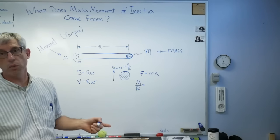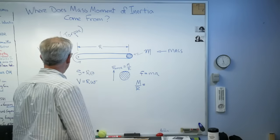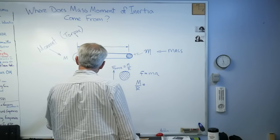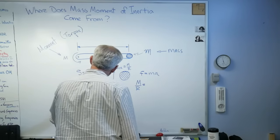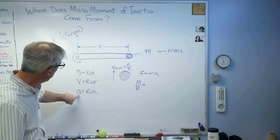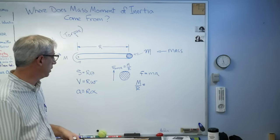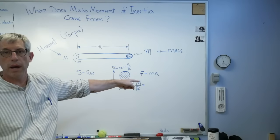So velocity equals R times omega. The derivative of angular position is angular velocity. Well, it worked once, let's do it again. It's position, velocity—we'll call this linear acceleration. So linear acceleration equals the radius times the angular acceleration. Well, guess what we're about to do here.